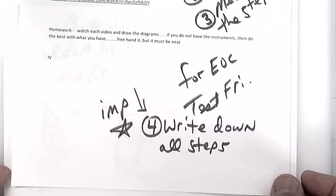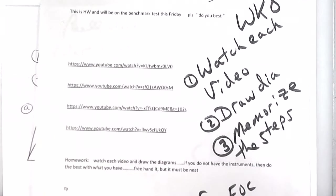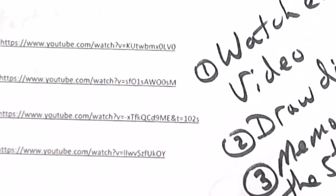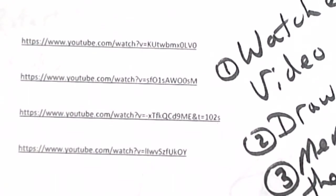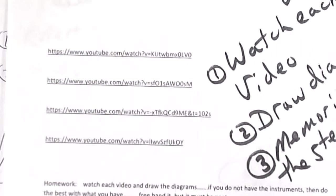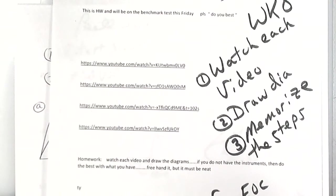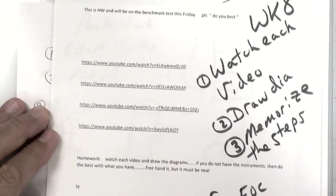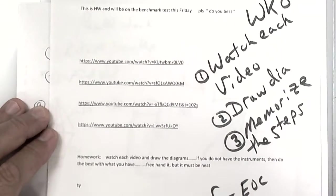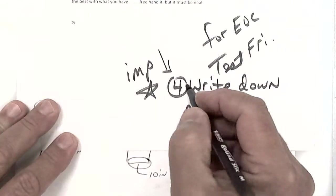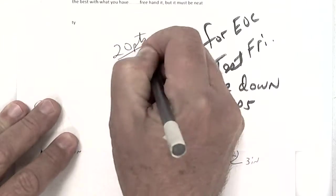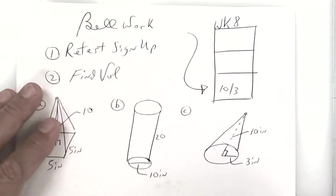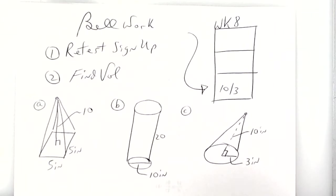Here are the links — you can maybe hone in on them at home if you need to. I can probably make that a little bigger for you so you can pause it and go from there. I want you to put a heading like 'Constructing Congruent Angles,' then go through and write the steps. Memorize the steps. This is for 20 points, will be picked up on Friday, and it's going to be on the benchmark test as well.